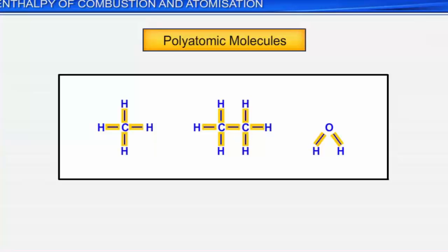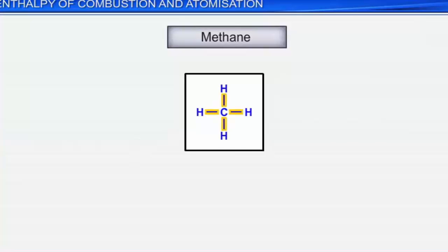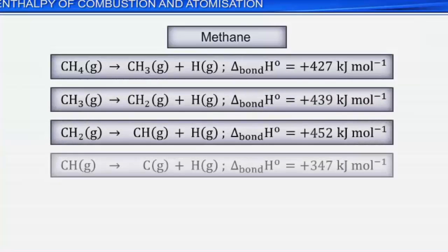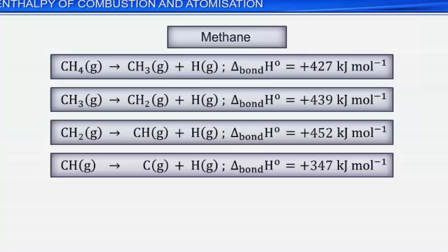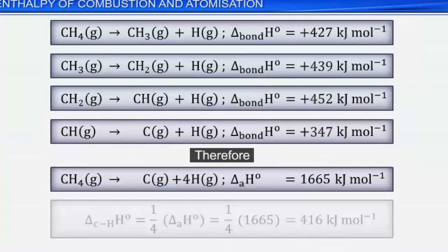For example, the enthalpy of atomization of methane is 1665 kJ per mole. Although the 4 C–H bonds are identical in terms of bond length and energy, the energy required to break individual C–H bonds in each successive step is not the same. The energies required to break these bonds are successively +427, +439, +452, and +347 kJ per mole respectively. The total energy required is +1665 kJ per mole. Hence, in such cases we use the term mean bond enthalpy instead of bond dissociation enthalpy. Thus, mean C–H bond enthalpy in methane is 416 kJ per mole.